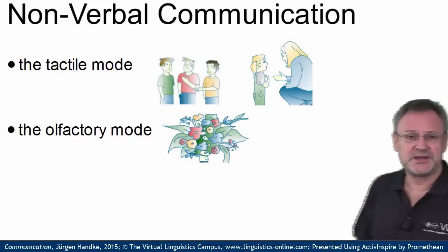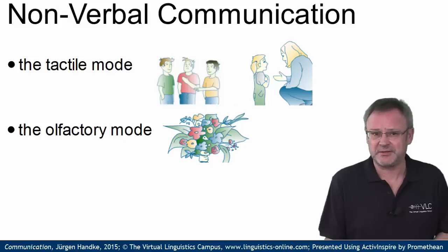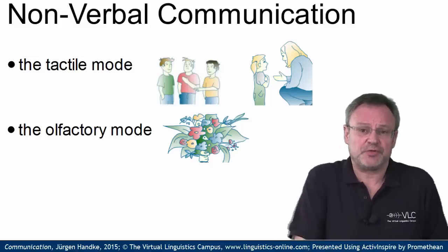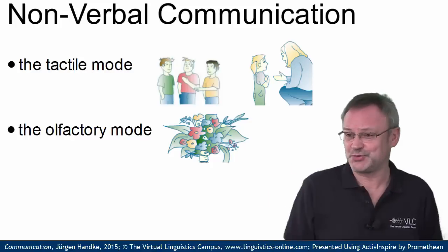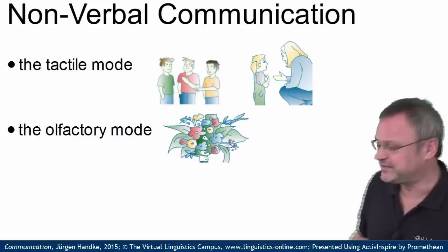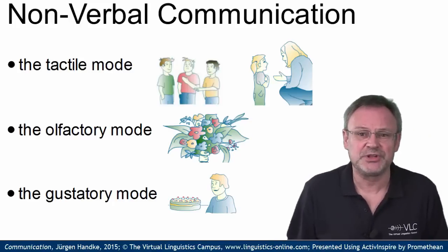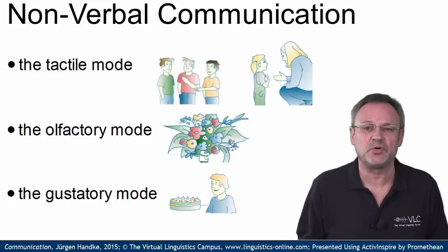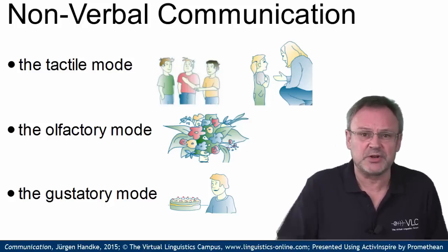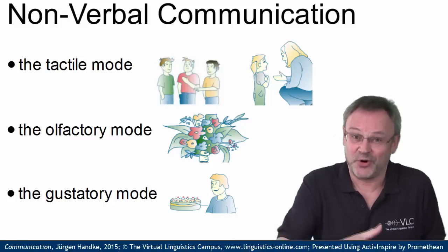The olfactory or smell-based communication mode is used relatively rarely. Yet it is possible to communicate via smell — for example, one can use the smell of flowers to create a certain mood. Even though the gustatory, that is the taste-based communication mode, is marginal in comparison with the other modes, one can communicate via taste. For example, one can offer a distasteful meal, a salty lemonade or a delicious cake.